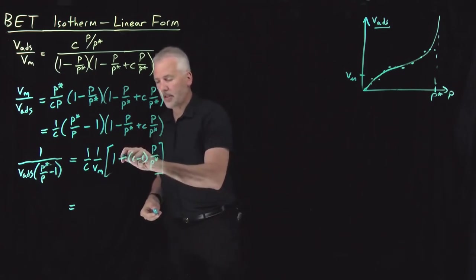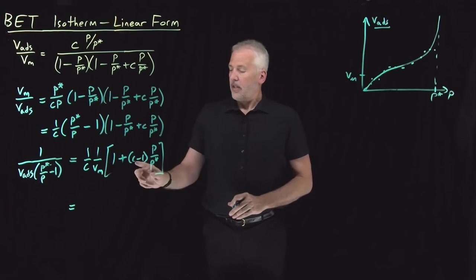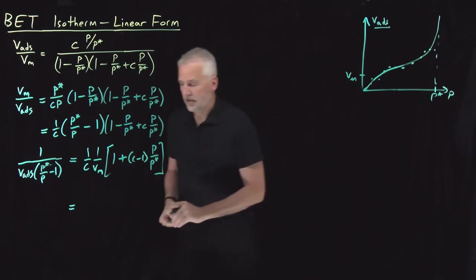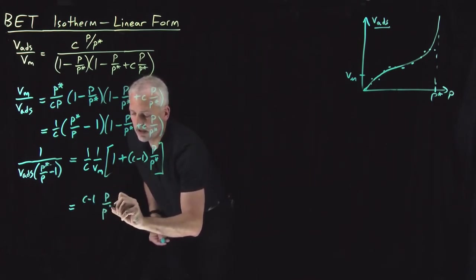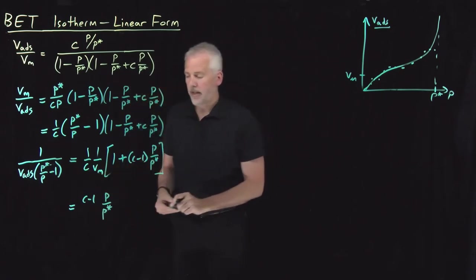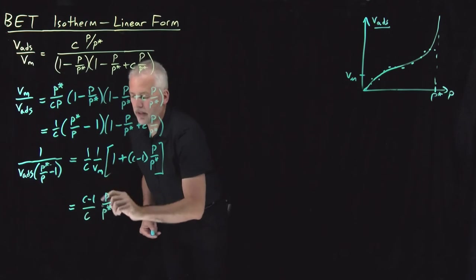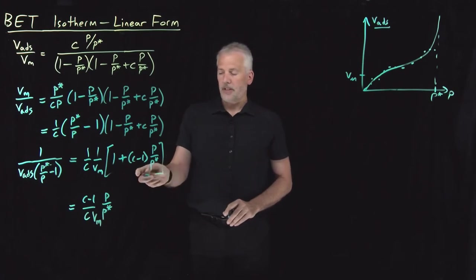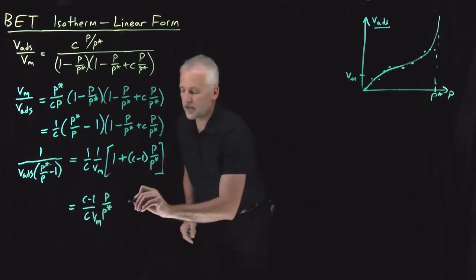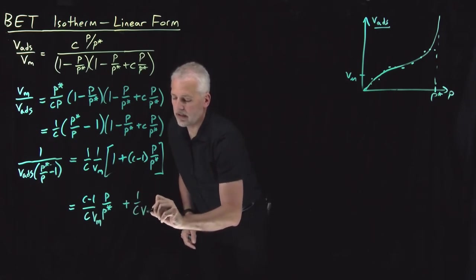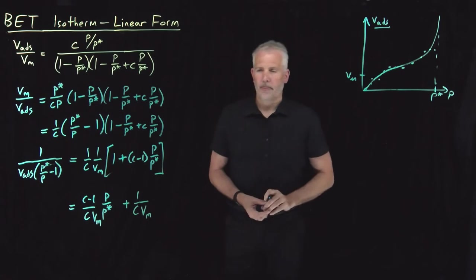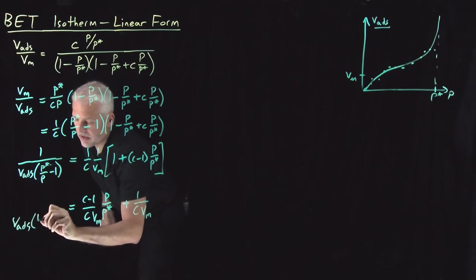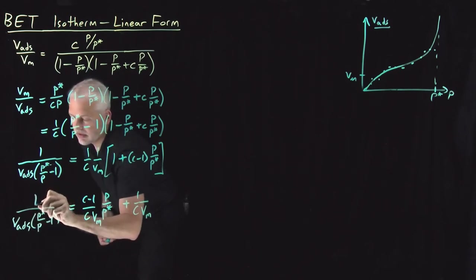I've got a plus C and a minus 1, so to get a plus C and a minus 1, I'll need a plus sign there. So I'm going to write this C minus 1, P over P star term first. I've got C minus 1, P over P star. I've got to divide by C, and I've got to divide by Vm. That takes care of the second term in the square brackets. I've also got the first term in the square brackets, this 1, so that's just 1 over C times Vm. All right. That's my right-hand side. Left-hand side is fine the way it is. It's adsorbed volume, P star over P minus 1, upside down.